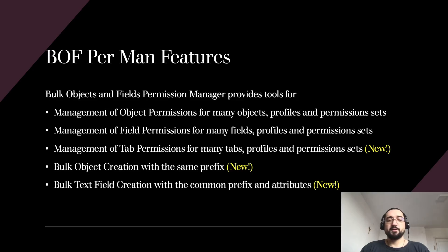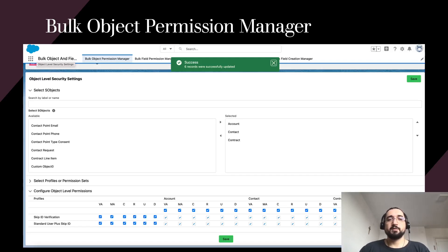Another new feature is bulk object creation with the same common prefix, and bulk text field creation with a common prefix and attributes. All of these last three features are brand new in the second generation version of the package. To upgrade from the previous first generation package you need to uninstall it, because there is currently no way to migrate from first generation to second generation other than uninstalling the first generation package and installing the second generation version.